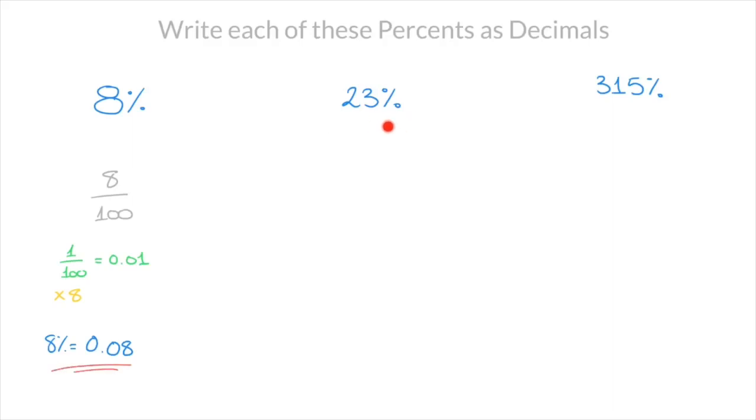Let's look at the second example. We have 23%. In the same way, we can state that this equals 23 over 100. And remembering that 1 over 100 is equal to one hundredth, that's 0.01,